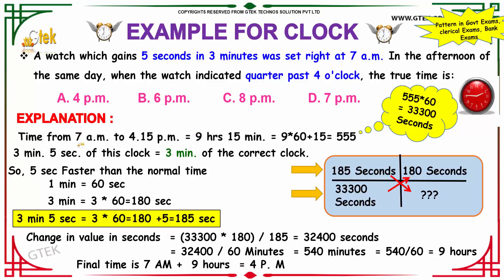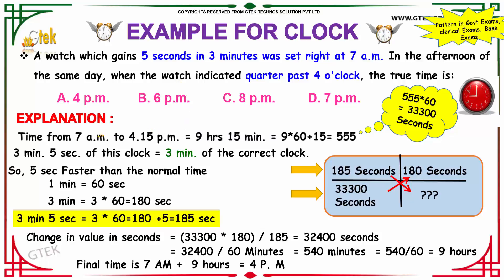Our time span is 7 a.m. to 4:15 p.m., which is nine hours and fifteen minutes. Converting into minutes: 9 × 60 + 15 = 555 minutes. Converting 555 minutes into seconds: 555 × 60 = 33,300 seconds. So totally we have 33,300 seconds between 7 a.m. and 4:15 p.m.